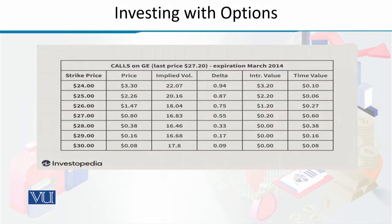Now, if you look at this data, we can see that — assuming the expiration date is March of a certain year — there are multiple strike prices, multiple current prices, implied volatility values, delta, intrinsic value, and time values.